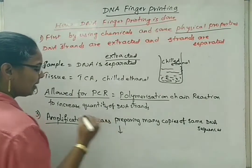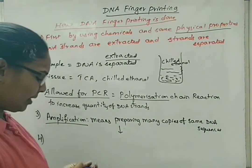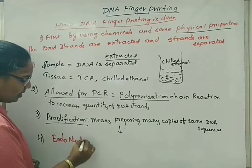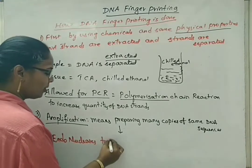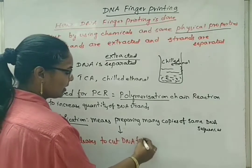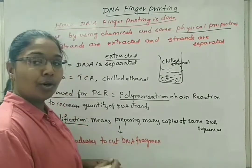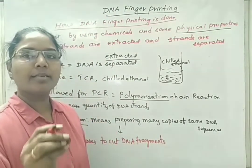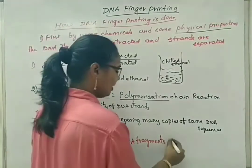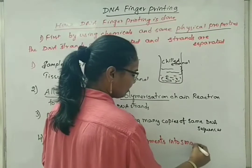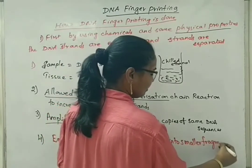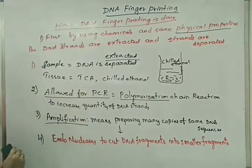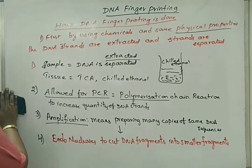The next method is very important in DNA fingerprinting. We use endonucleases to cut DNA fragments into small pieces. Those small pieces are very helpful in studying the DNA and identifying what the nitrogen base sequences are. This method changes DNA very soon and easily into smaller fragments, so that further studies are easy to carry on. These are the first four steps in the DNA fingerprinting method.